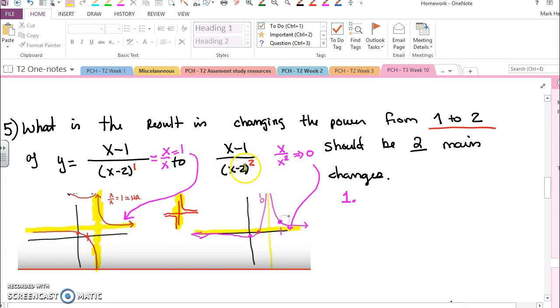Whereas 1 over x squared looks like, I like to call it the volcano function, and we approach the asymptote on the same side, and that happened right here.